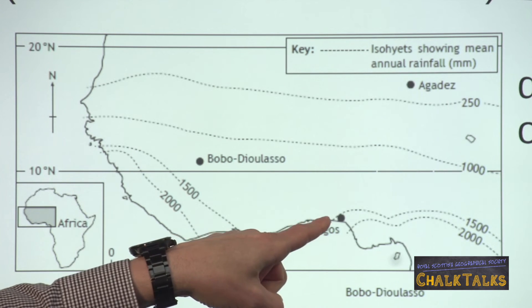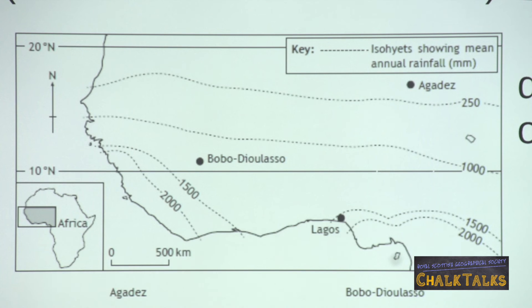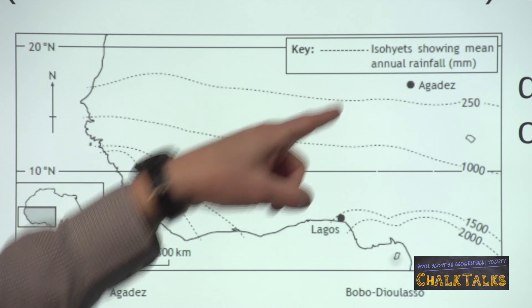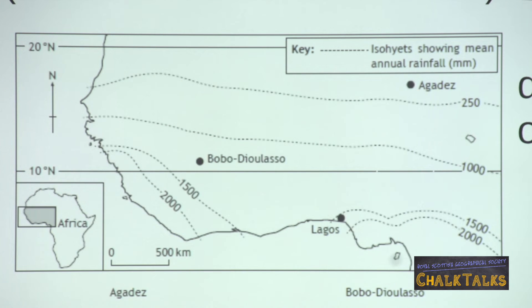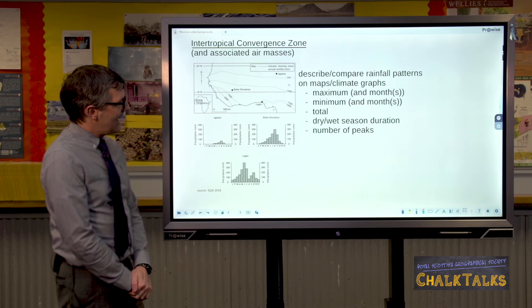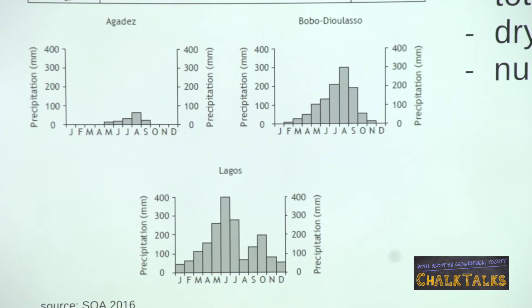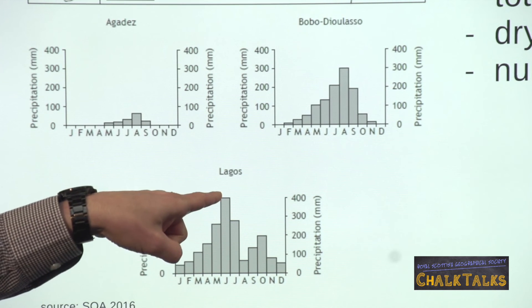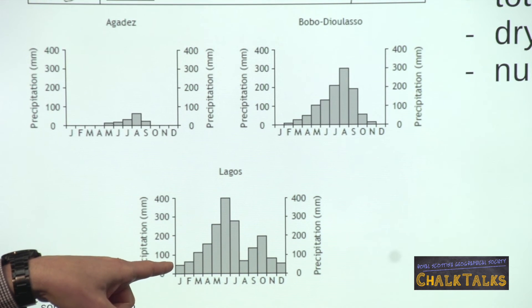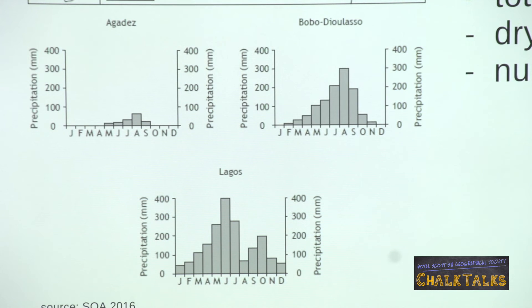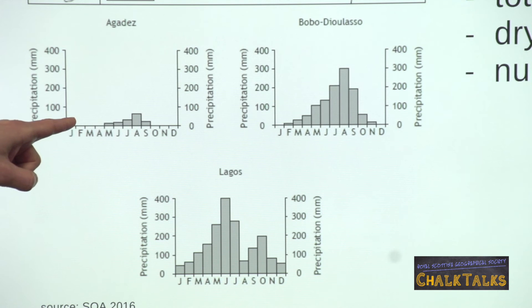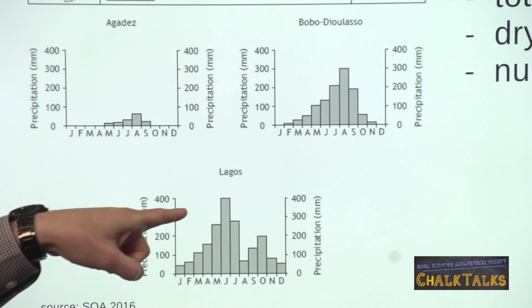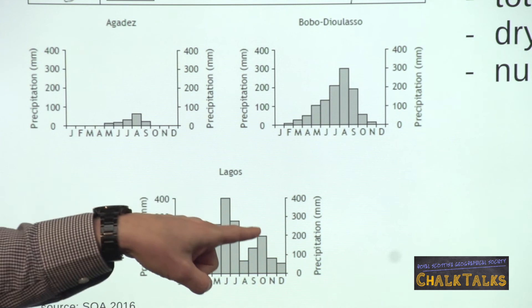You can see that Lagos in the south has just over 1500 millimetres of annual rainfall. You would need to describe this and also the other cities on this map. When describing graphs, it's important to give actual figures. If you are asked to describe these graphs, you'd want to pick out maximum and minimum values and the months that they occur in. You'd want to describe the total amount of rainfall and also where there are wet seasons and dry seasons. Quite often in the south, cities have more than one peak, and it's important to acknowledge this and give the values for each of the peaks.